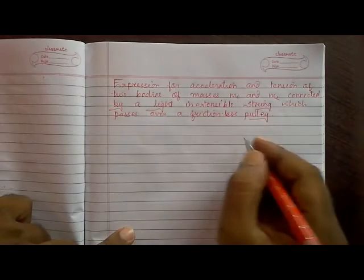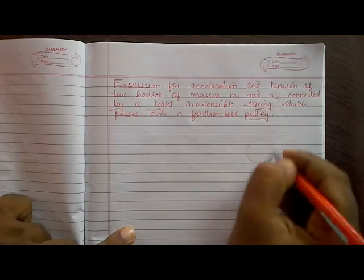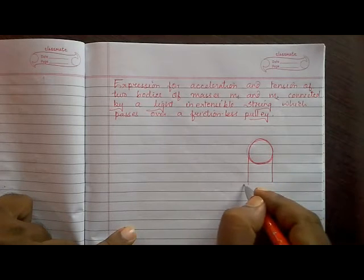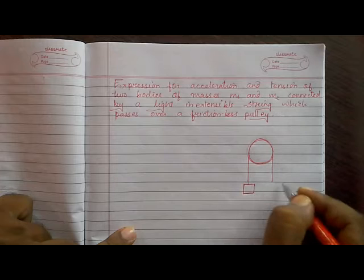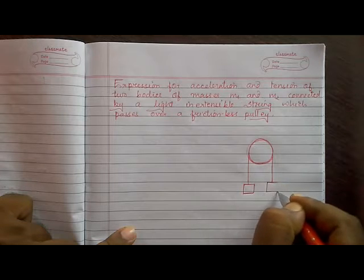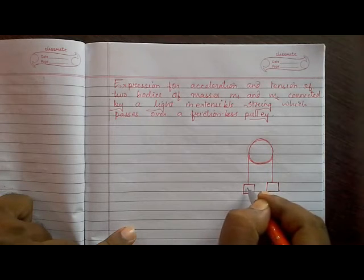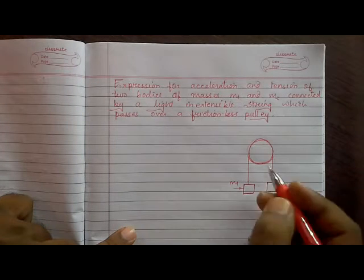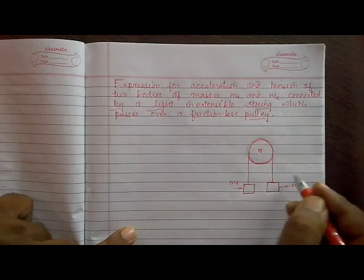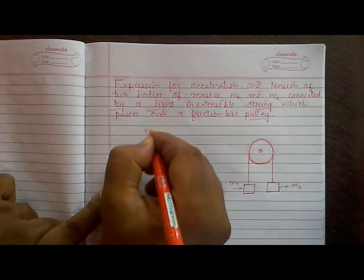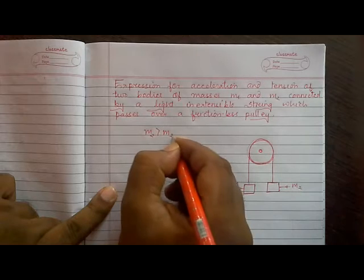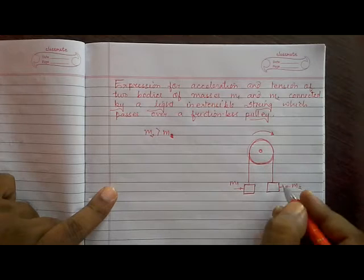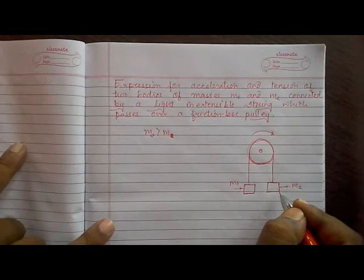For this, let us first draw the diagram. We have a pulley and two masses m1 and m2 suspended by a string. Let us assume that m2 is greater than m1, so as a result m2 will be moving downward and m1 will be moving upward.